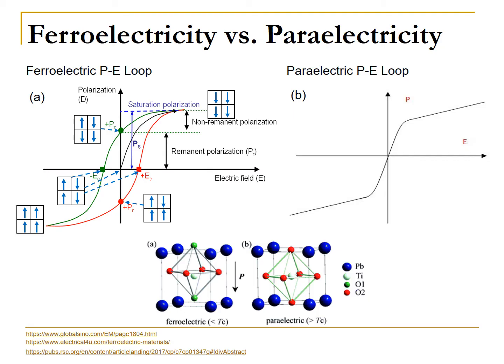On the other hand, in figure B, paraelectric materials can also be electrically polarized by applying an electric field. However, when the field is removed, the polarization of the material decreases back to zero. Returning to the diagram below, we see that above the transition temperature T, the titanium atom is in the center of the cell, no longer producing a net dipole moment. It can be moved by an electric field, but once the field is gone, it will return to its original position. This is the general reason why paraelectric materials have no remnant polarization.